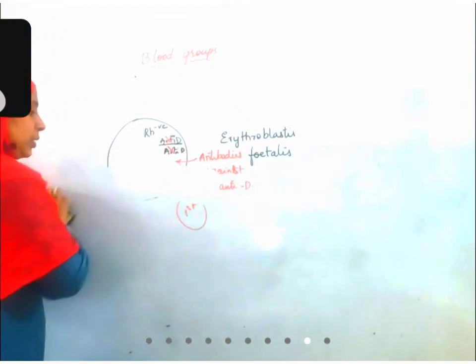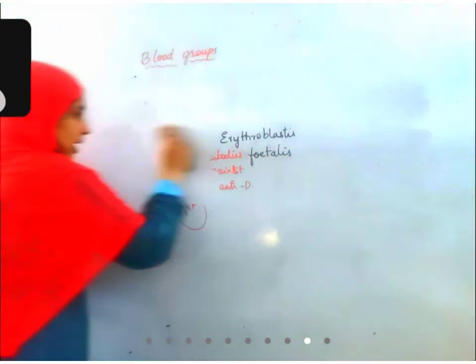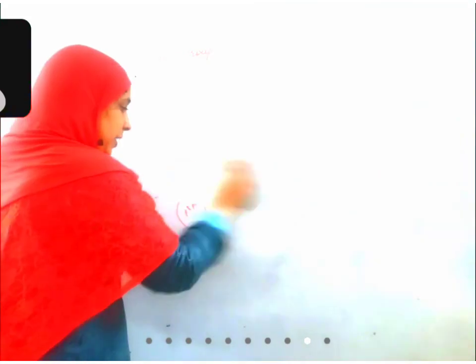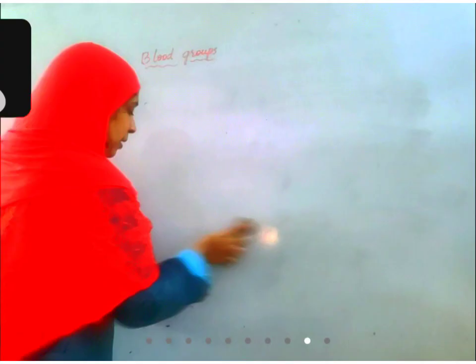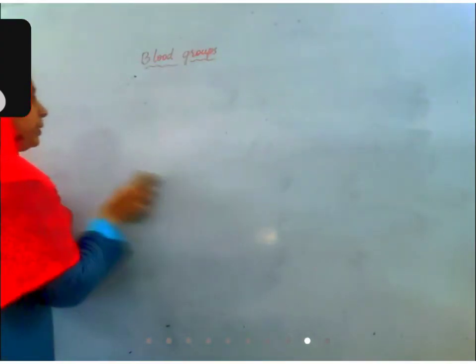So that is about it — RH blood grouping and ABO blood grouping.